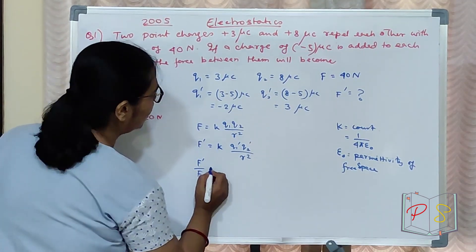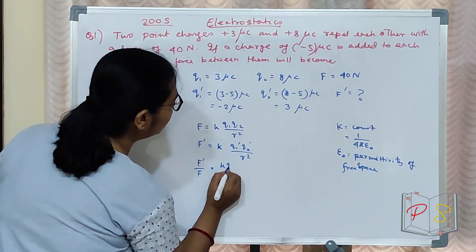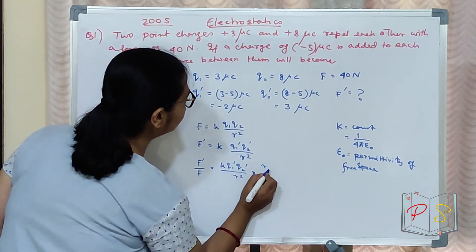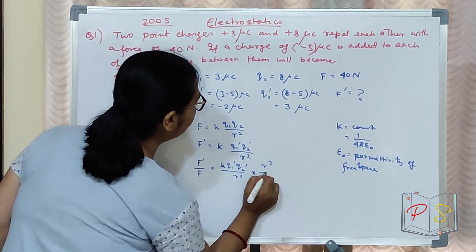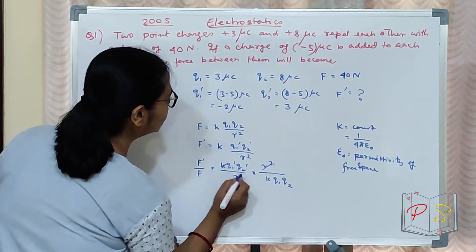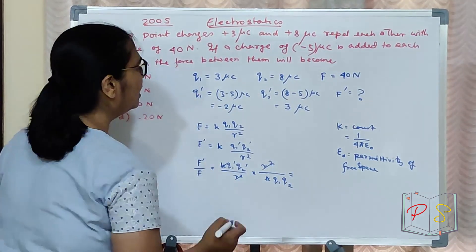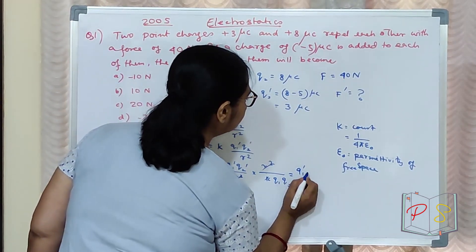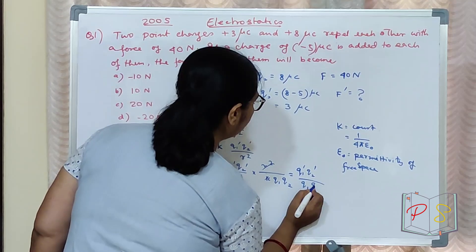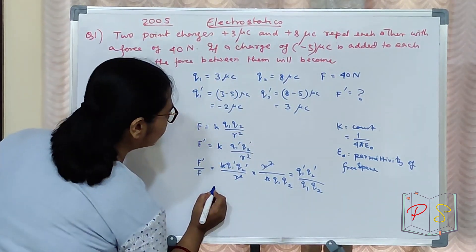Take F dash by F. What will you get? K Q1 dash Q2 dash divided by R square, divided by K Q1 Q2 by R square. Everything cancels. What remains is Q1 dash Q2 dash divided by Q1 Q2. Clear?